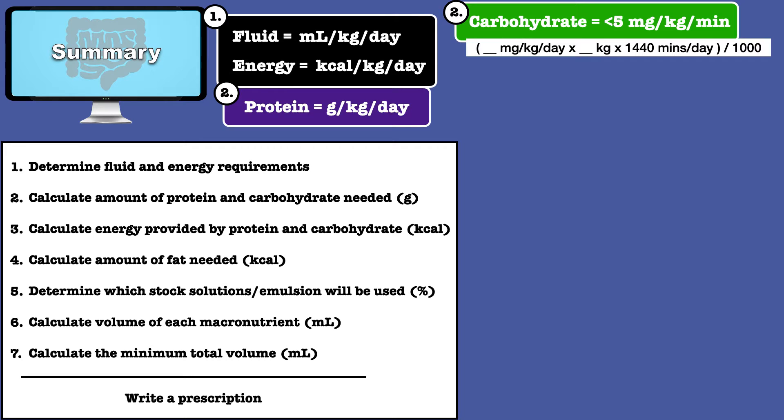This is because exceeding that value increases risk for complications like hyperglycemia and liver dysfunction. So, you choose a rate below 5 and solve for grams by using the formula shown.